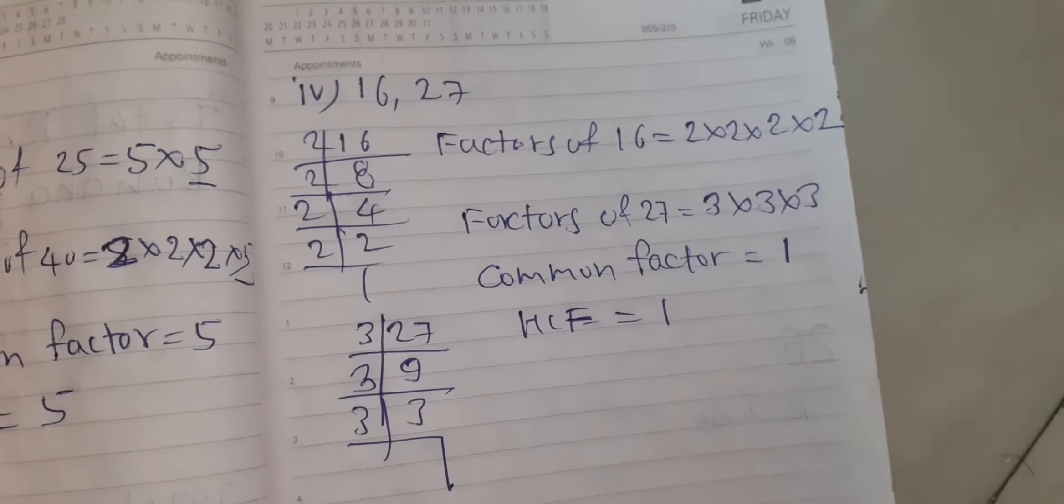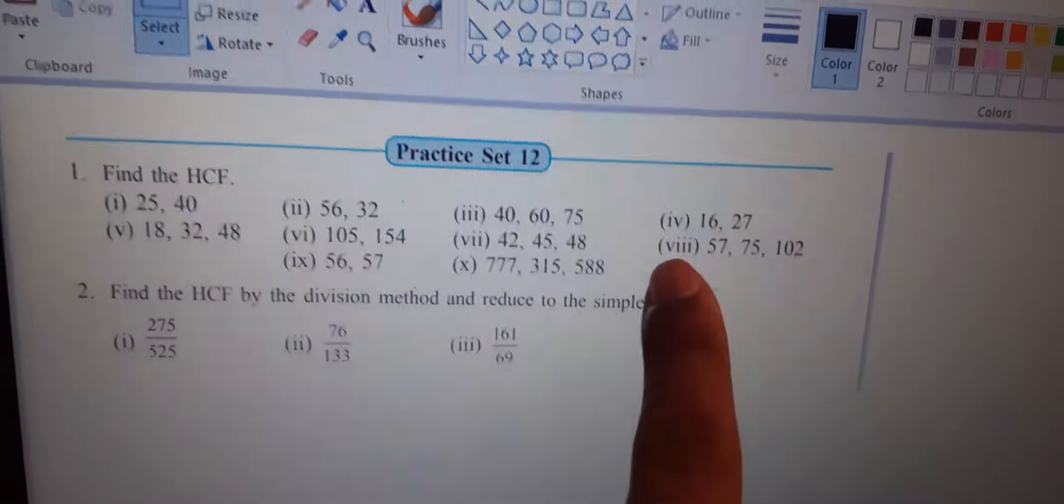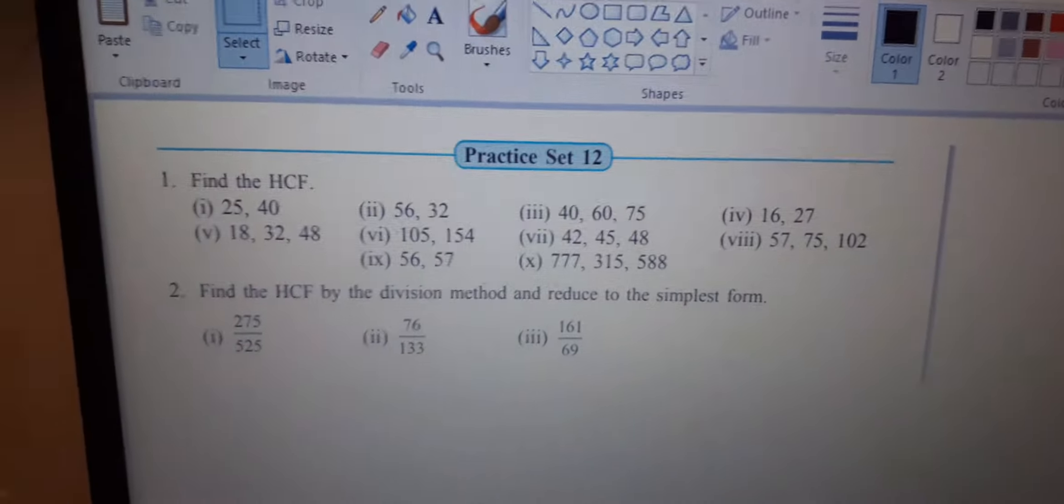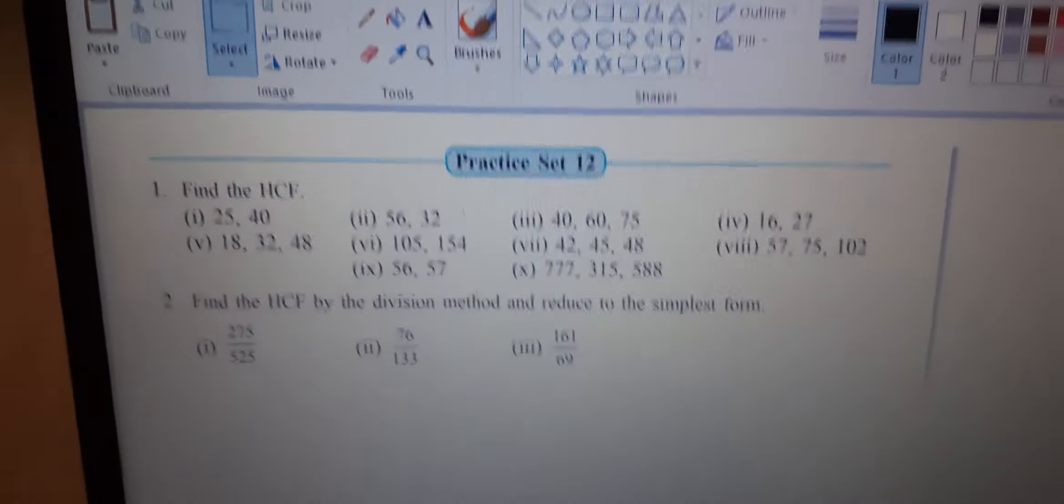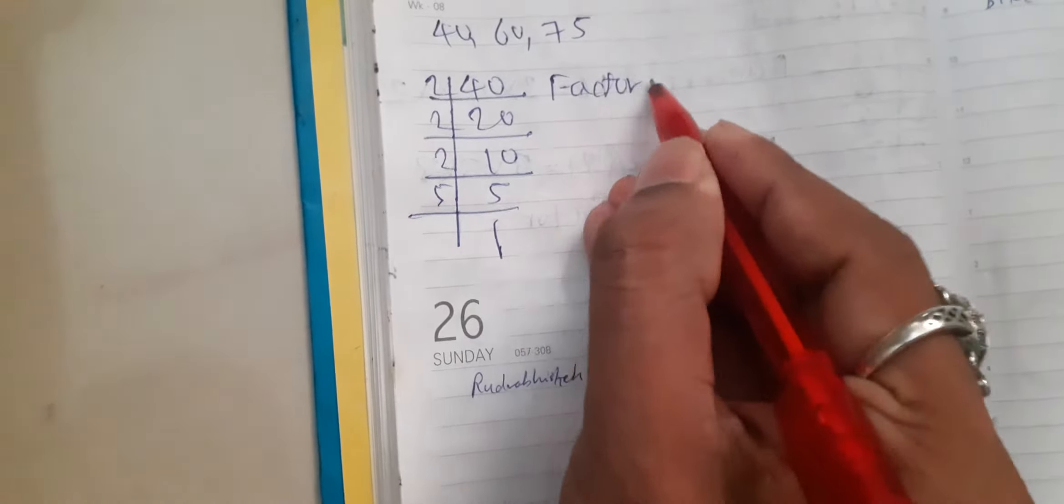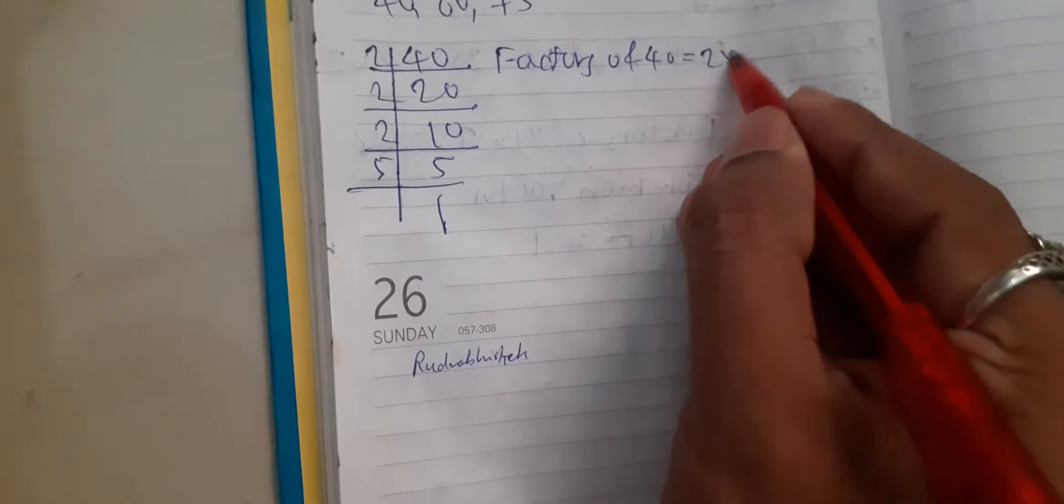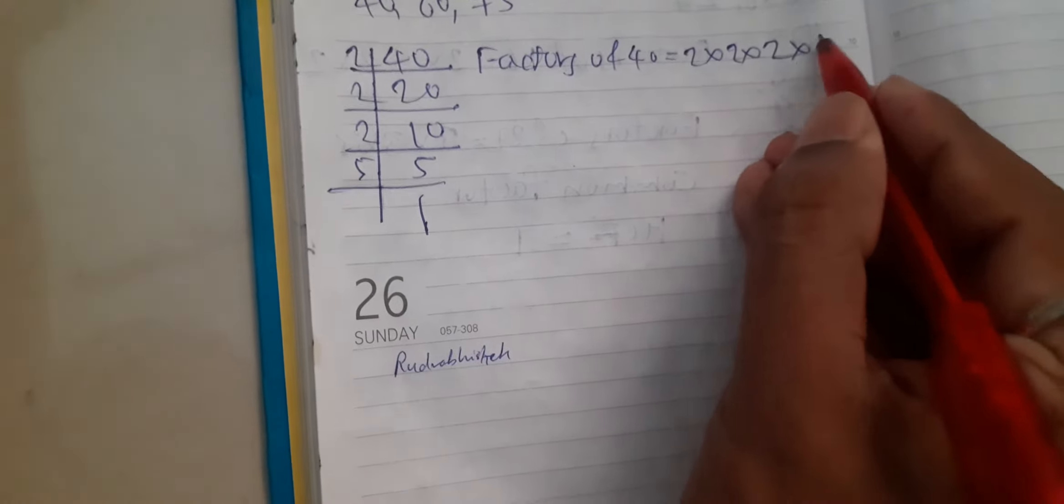Next question, third or eighth question you solve. Third: 40, 60, 75. 40, we have to get the factors. 2 times 20 is 40, 2 times 10 is 20, 2 times 5 is 10, and 5 times 1 is 5. Factors of 40 is equal to 2 into 2 into 2 into 5.